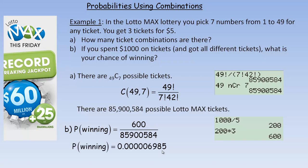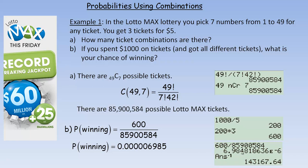If you divide that, you don't have much of a chance to win — it's 0.00006985, or about 0.00007% as a percent. Because this number is so small, what's often done is you take the reciprocal of that number — to the power of negative 1 — and you get 143,167.6. Rounding, there is approximately a one chance in 143,168 of winning. That's approximately what the probability would be.